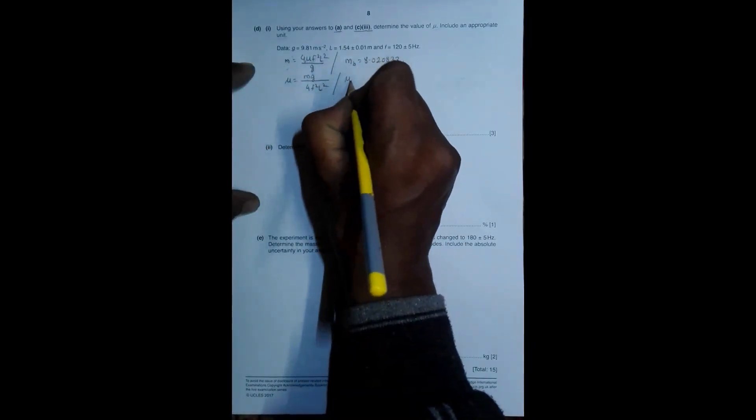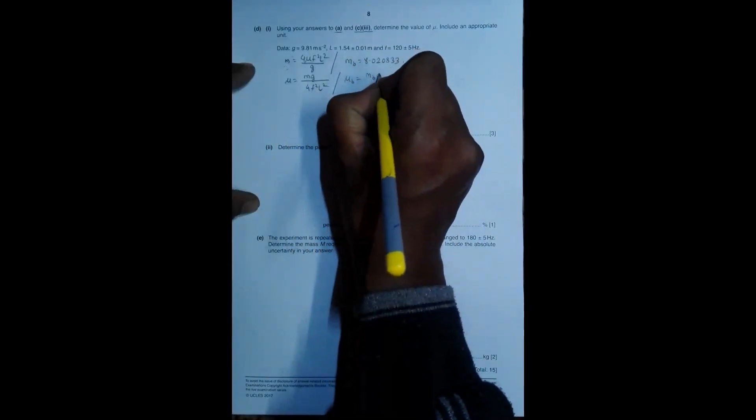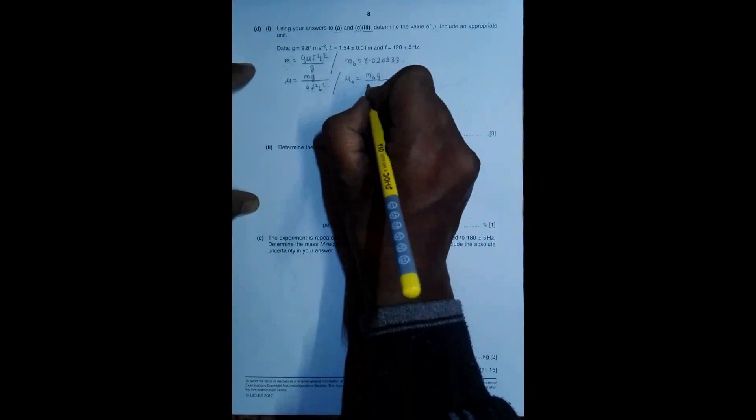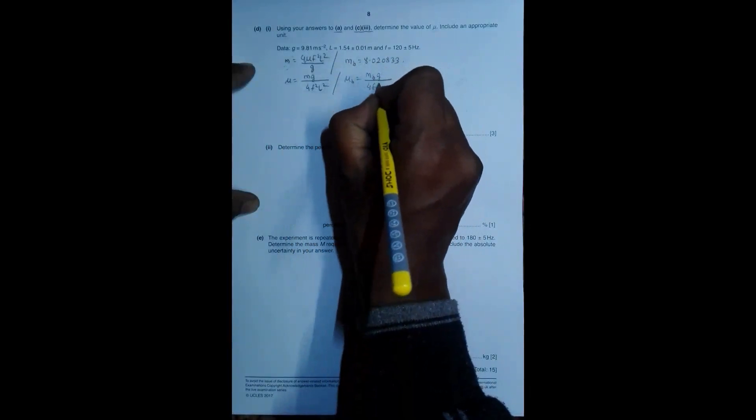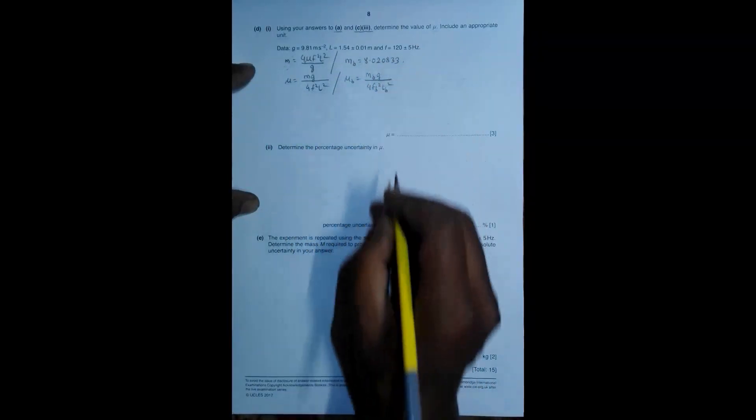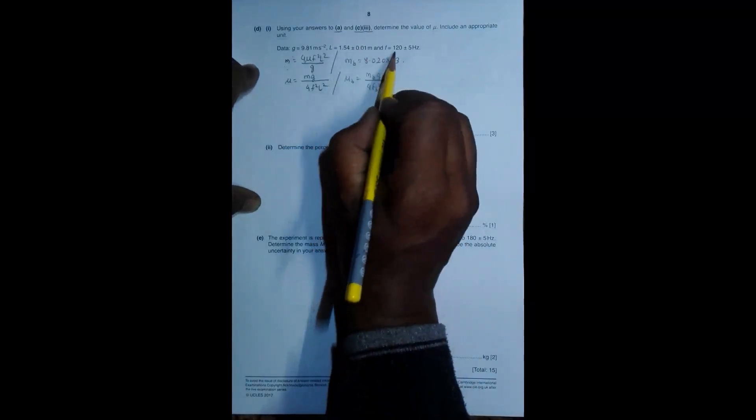Mu best equal to M best into G divided by 4 F best square L best square. All the best, because here they are given uncertainties, so this is the best value. Since it has got uncertainty, this is the best value,